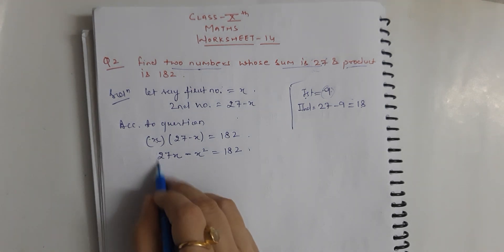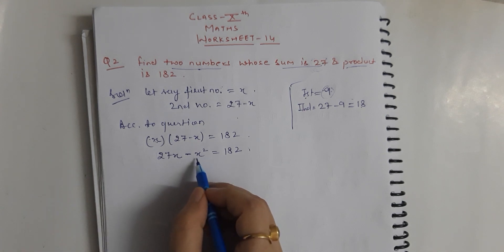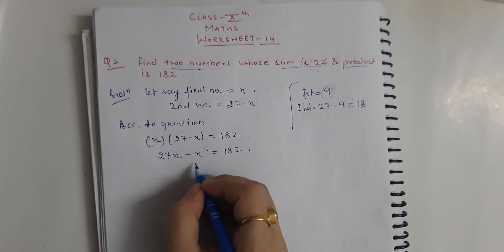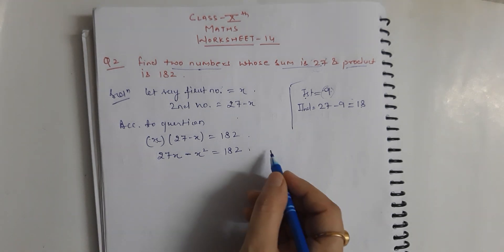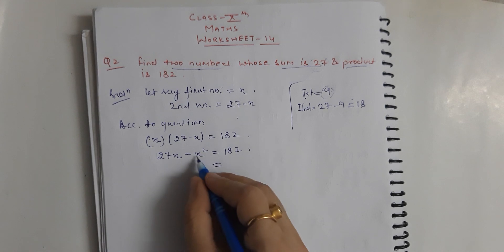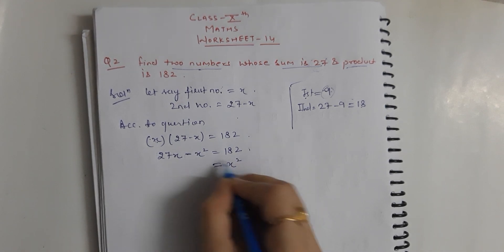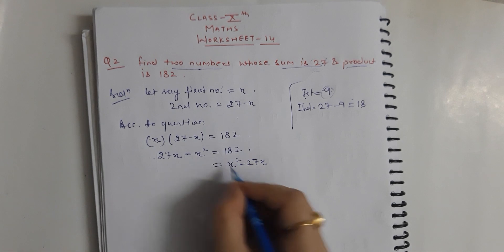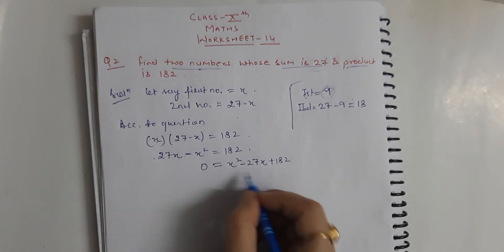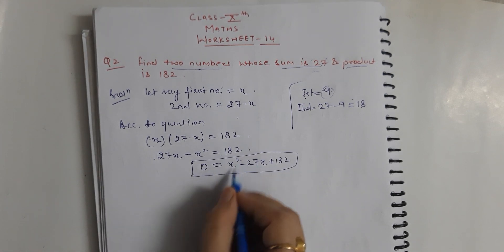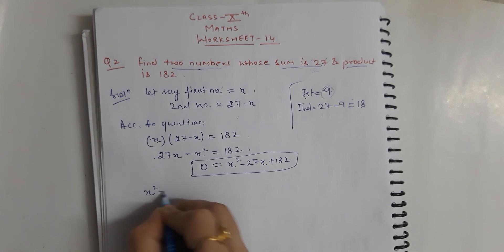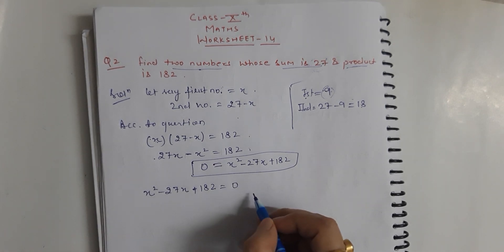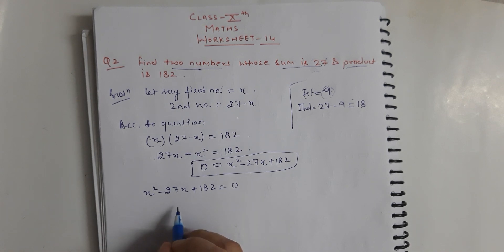Now we write this in standard form. We shift terms to one side so that the x squared term is positive. The standard form becomes x squared minus 27x plus 182 equals 0. This is the quadratic equation we need to solve.